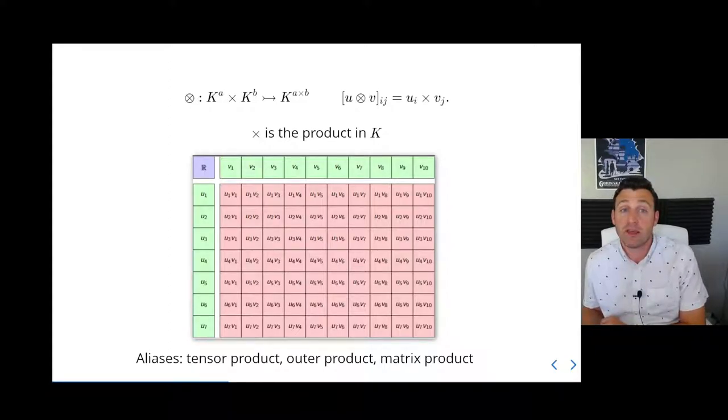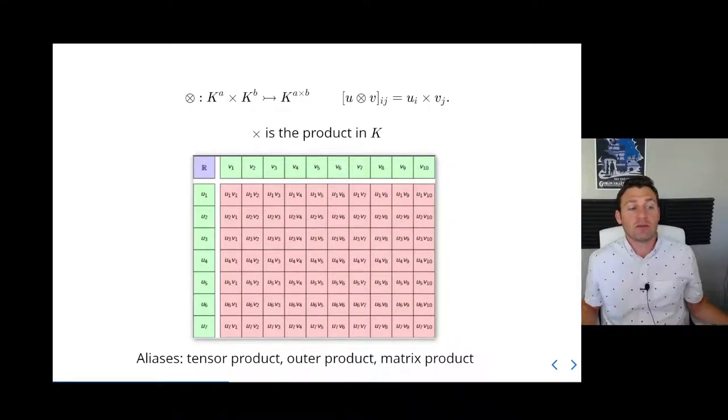We can look at the most basic form of a tensor product. This is when we think of the vector spaces K^a and K^b mapping into matrices that are a by b matrices. I have here a grid with rows and columns. The first component I turned into a column and the second component I left as a row. Then I fill the grid up with the coordinate-wise product. This is nothing more than column times a row vector. This is often called an outer product. It's also just a form of matrix product.